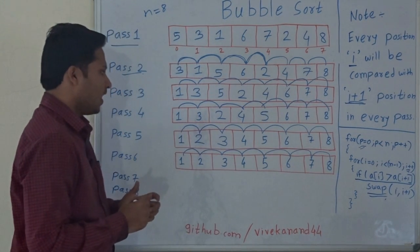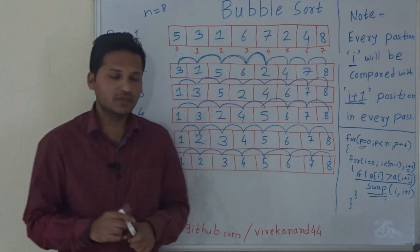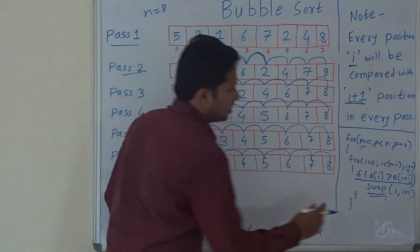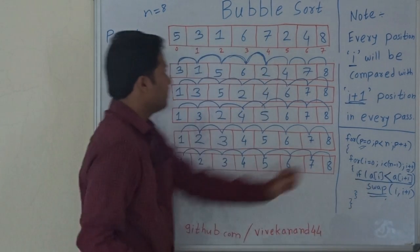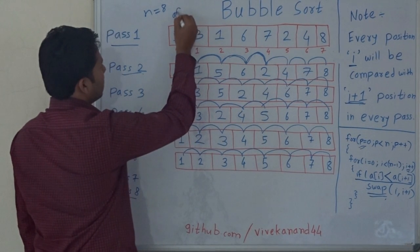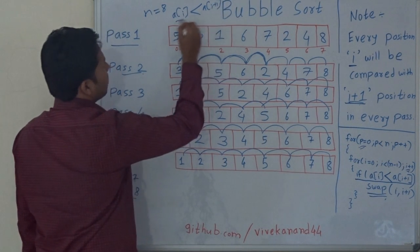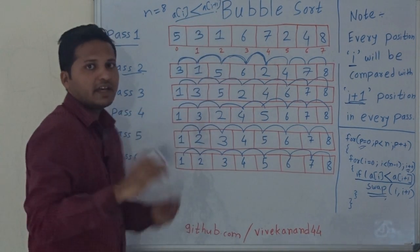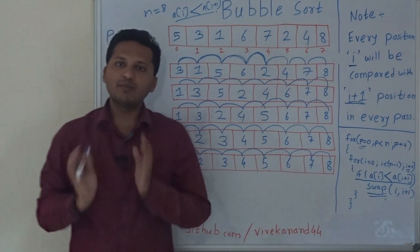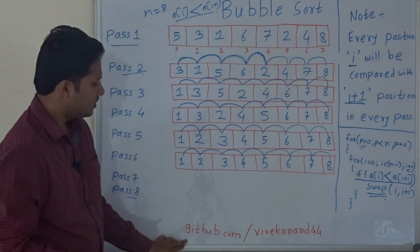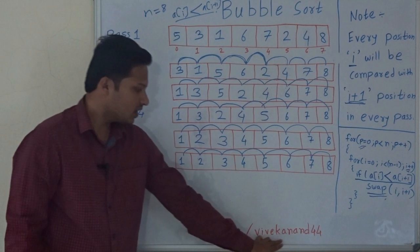Now I will tell you what to do if you want to sort the array in decreasing order. There is only one change: for swapping, you have to swap if a[i] is less than a[i+1] — then the array will be sorted in decreasing order. This is bubble sort, and you can get the full code on my GitHub: github.com/vivekanand44.